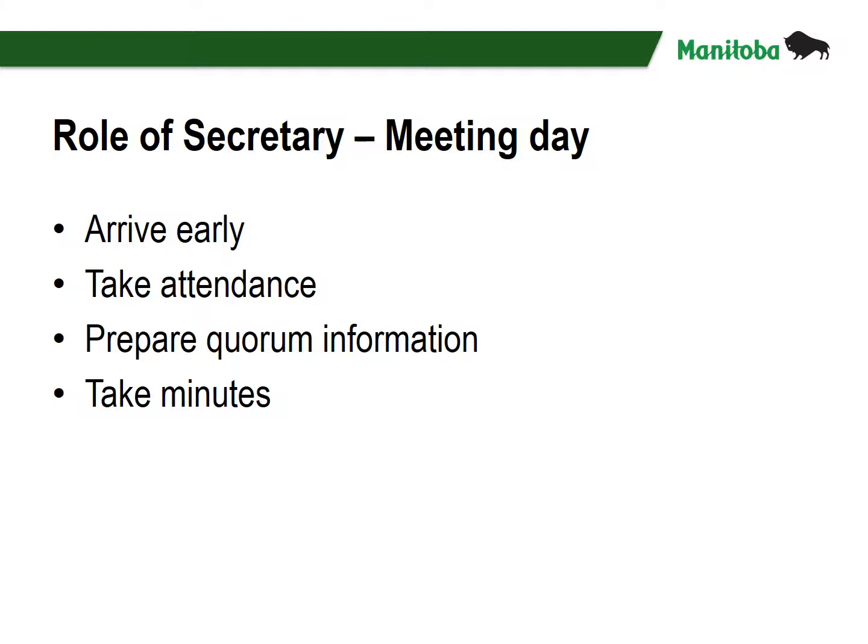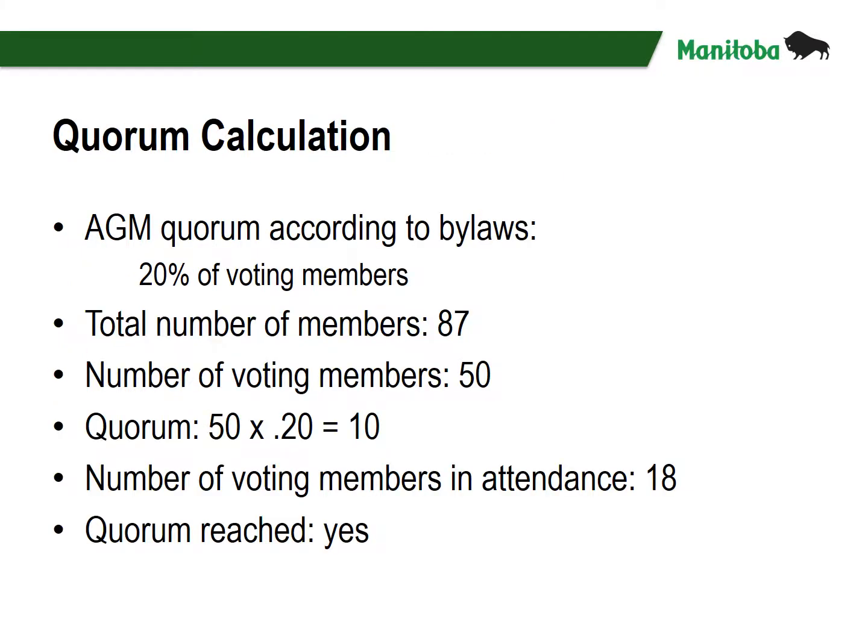On the day of the meeting, the secretary should arrive early, take attendance, prepare quorum information, and take minutes. Here is an example of determining quorum for an organization's AGM. The actual numbers used will depend on the requirements of your constitution. For example, if AGM quorum according to bylaws is 20% of voting members, and the total number of members is 87, with 50 voting members, the quorum would be 50 times 0.2, which equals 10. If the number of voting members in attendance is 18, quorum has been reached.